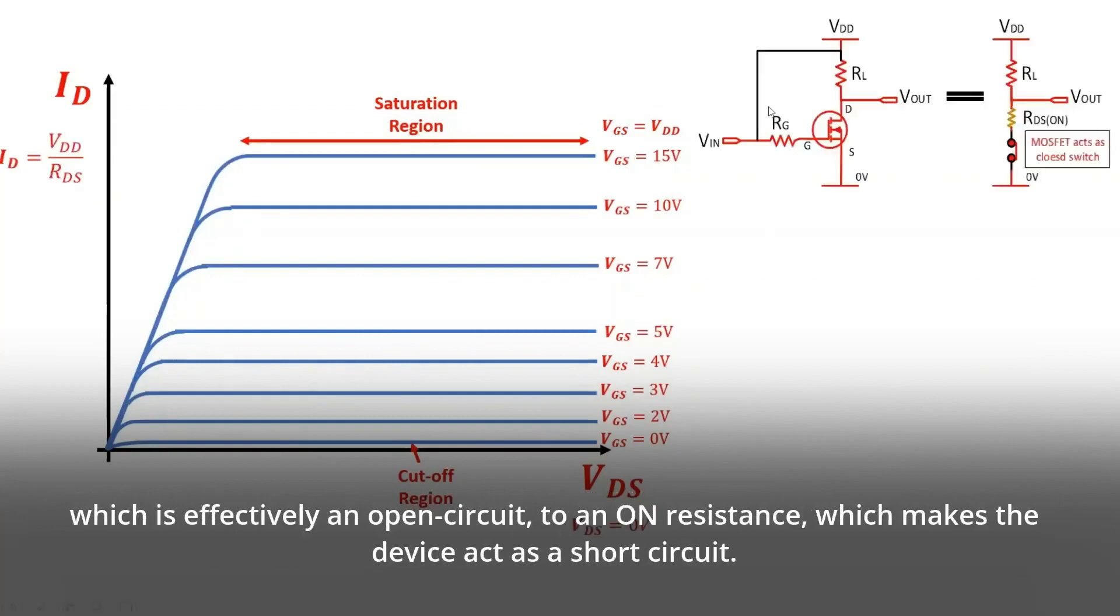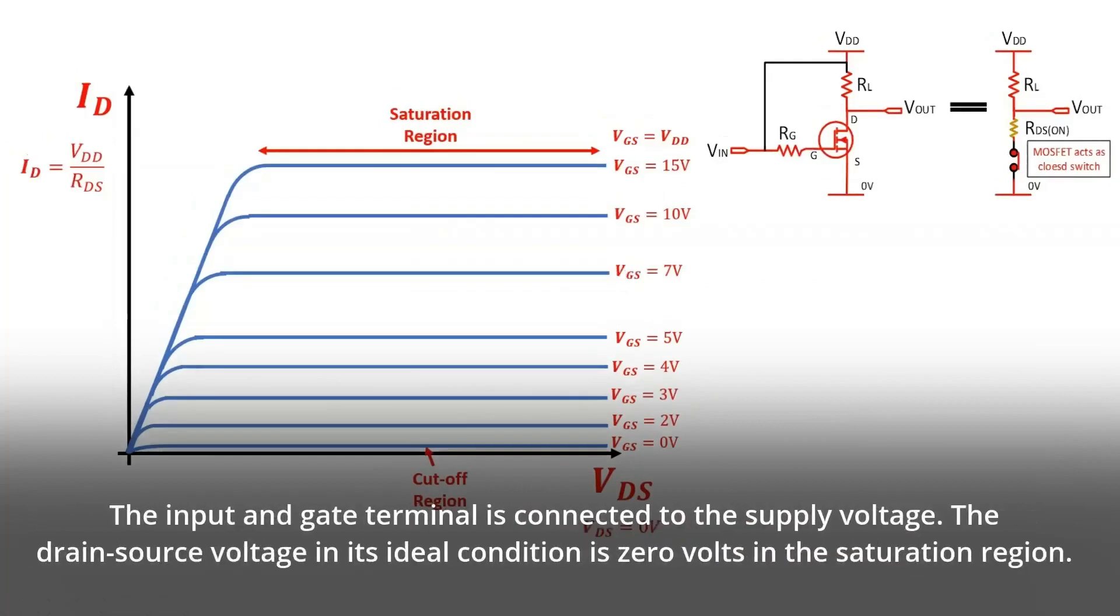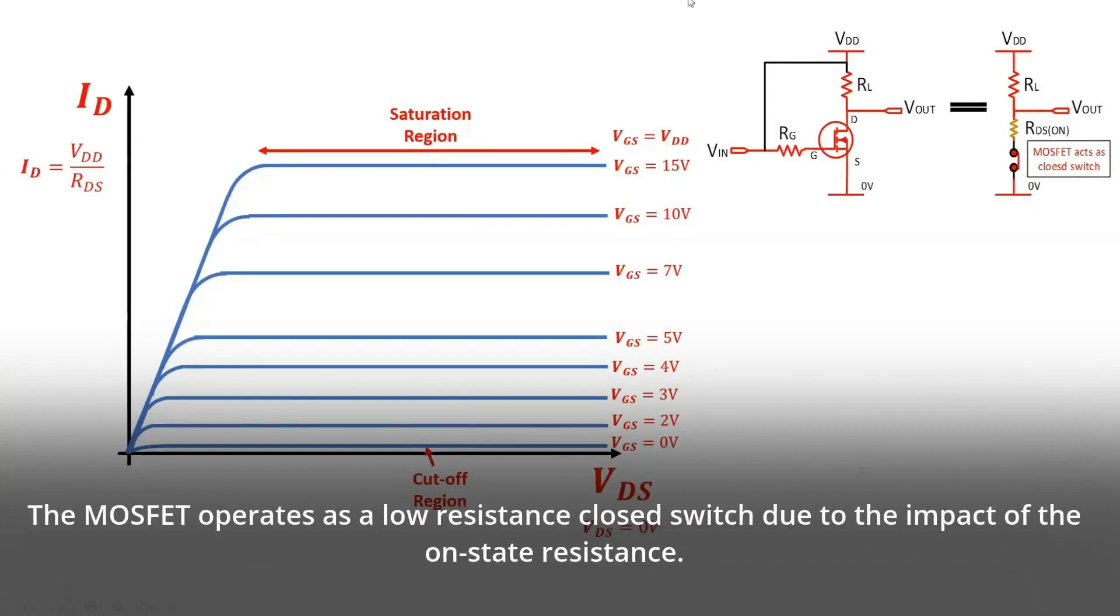The input and gate terminal is connected to the supply voltage. The drain source voltage in its ideal condition is zero volts in the saturation region. The MOSFET operates as a low resistance closed switch due to the impact of the on-state resistance.